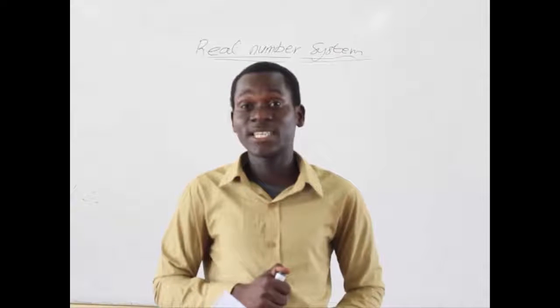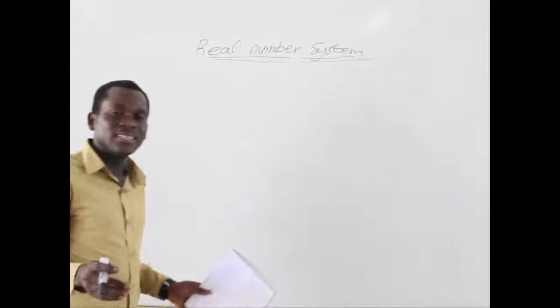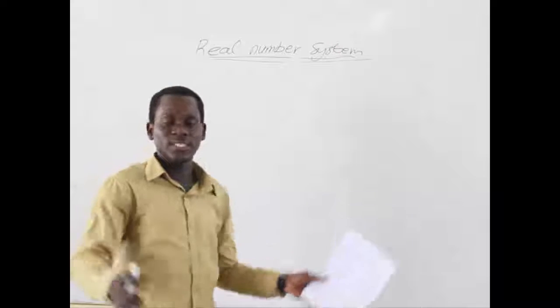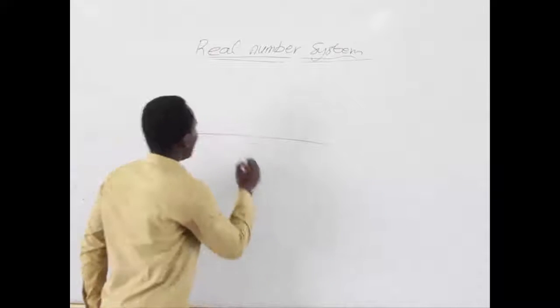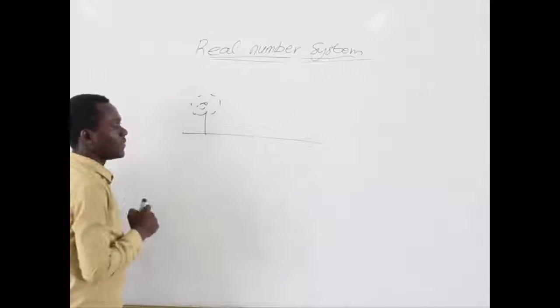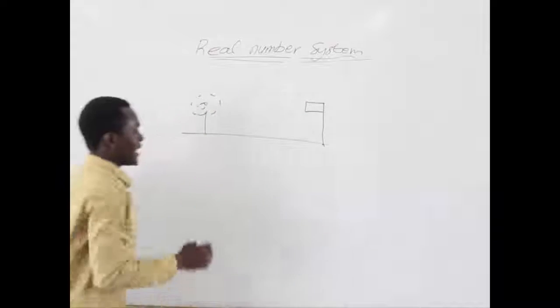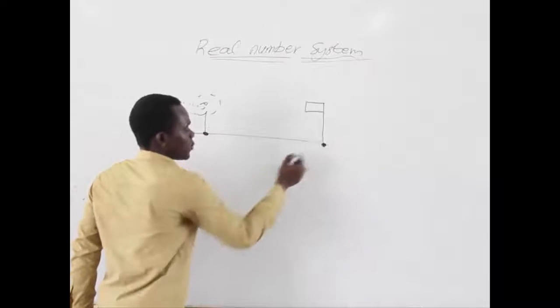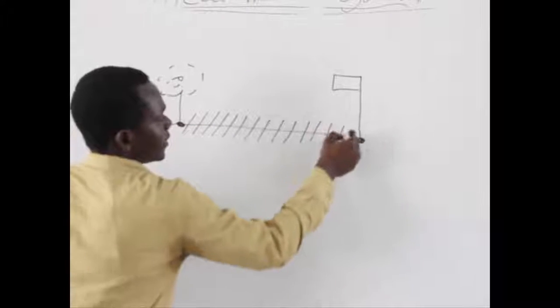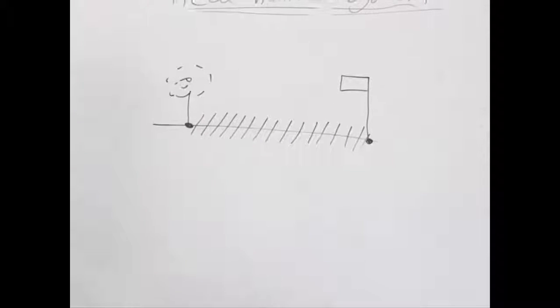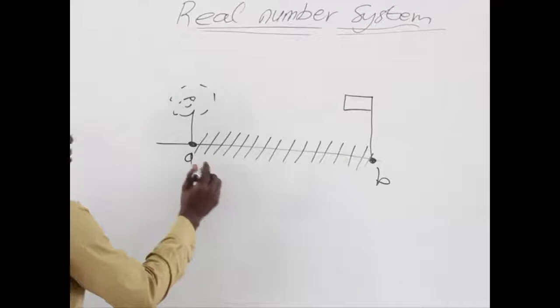What comes to mind when we say the word interval? Interval simply means the space in between two fixed points or two limits. For example, assume I have this line and there is a tree at one side of this line and there is a pole at the other side. You can see that this becomes a fixed point and another fixed point, and the space between these fixed points is what we term as interval.